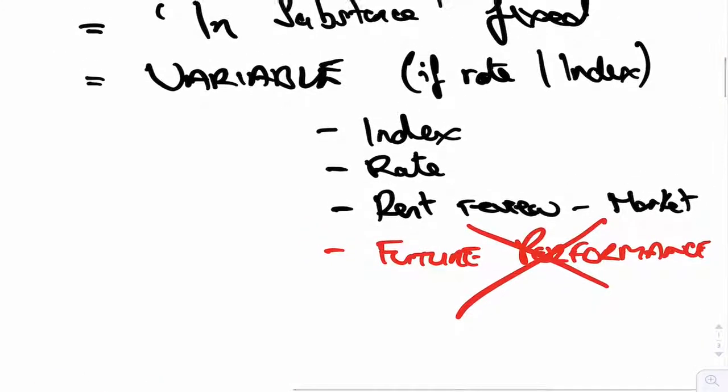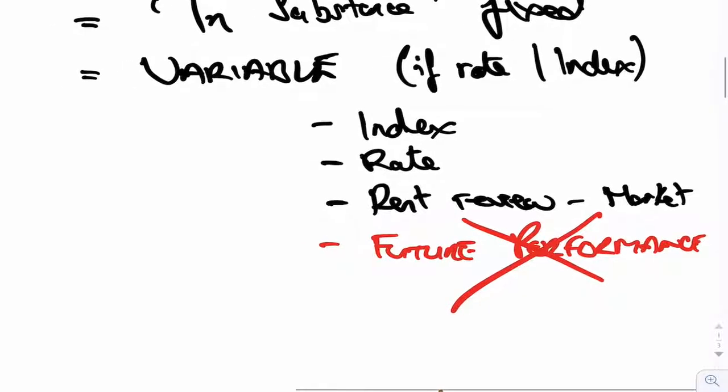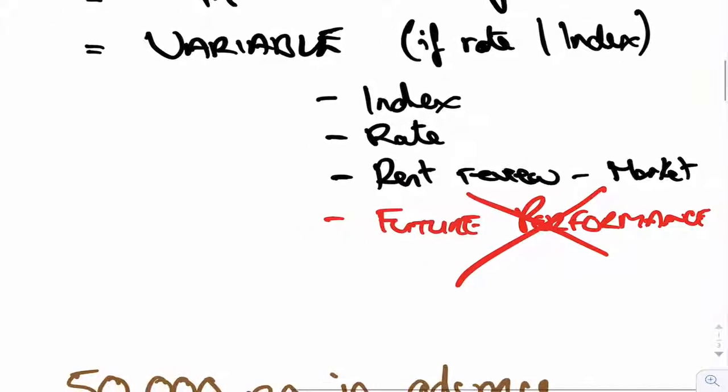Now, the next one, future performance. So future performance just says, what if you have to pay more based upon how well you do, how well your asset does? And I've put a big red cross through that to show you that doesn't get included in the lease liability.